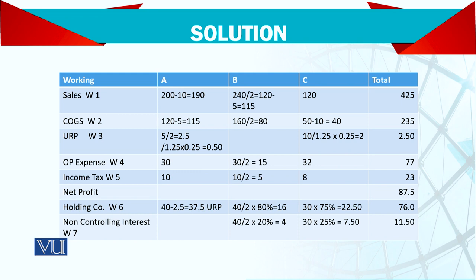For cost of goods sold: since sales were reduced by 5, cost must also be reduced — that's the double entry. Sales are credited and cost of goods sold is debited as a minus. So cost is 160 divided by 2 for the half year. The unrealized profit is 10, so that gives cost of 40.